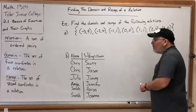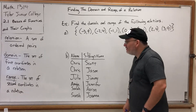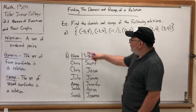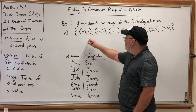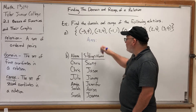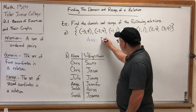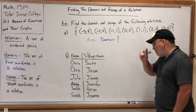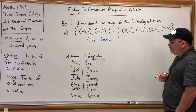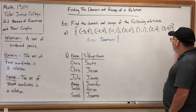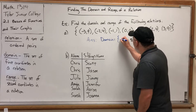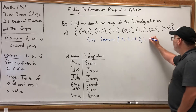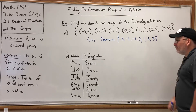Because the domain and range, by definition, are sets — just like a relation by definition is a set — we have the option of writing that set in braces. For this first example, to write the domain, all I need to do is list the first coordinates. The first coordinates in these seven ordered pairs from left to right are: negative 3, negative 2, negative 1, 0, 1, 2, and 3. A fairly easy task.